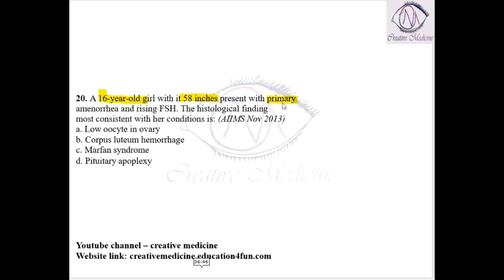Then, a 16-year-old girl with 58 inches height, primary amenorrhea, and rising FSH is seen. The question asks which histological finding is consistent with her findings. There will be low oocytes in the ovaries.